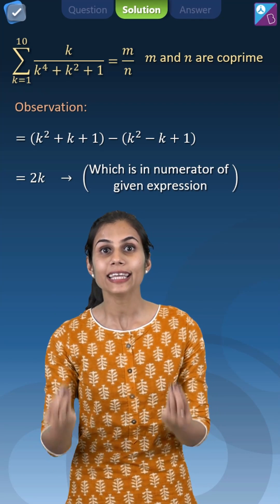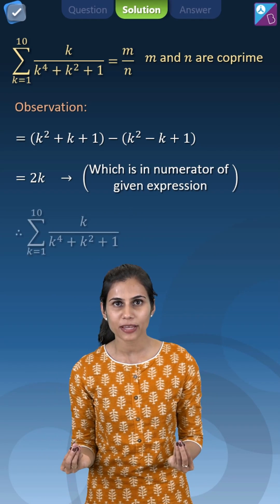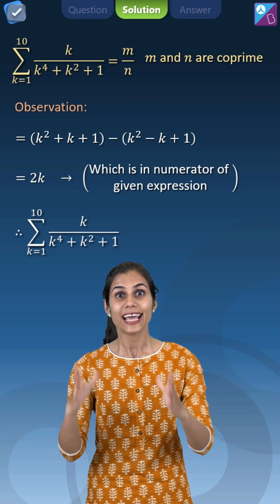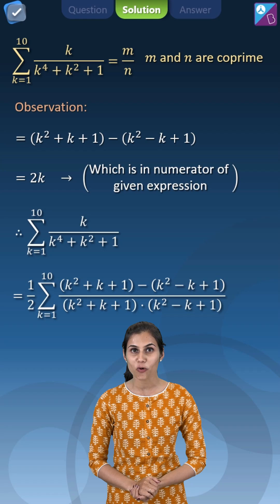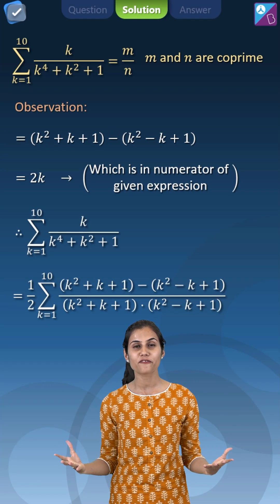This will eventually make your general term of the summation look like difference of two consecutive terms and that's a success because now our series is nothing but a telescopic series. We have a smile on our faces because we know when we expand the series the consecutive terms are going to get cancelled out.